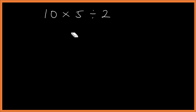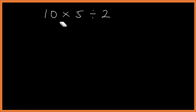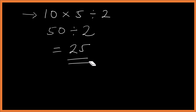Now try this: 10 times 5 divided by 2. We have multiplication and division — two orders of the same precedence — so we start from the left. 10 times 5 is 50, divided by 2 gives us 25. That's the correct answer.